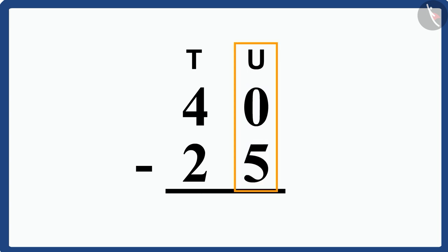We will use subtraction here. We will subtract the numbers written in the unit's place. Children, here 5 is a number greater than 0. We can solve this puzzle using borrowing. We have to borrow 1 from 4, so that our 0 will become 10.